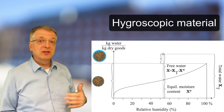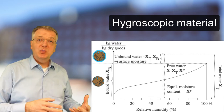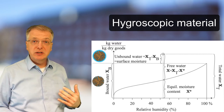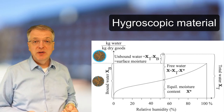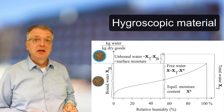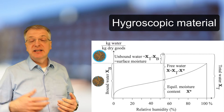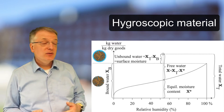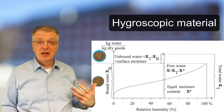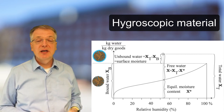Another way to divide the total water content is into bound and unbound water. The bound water is the equilibrium water content when the relative humidity of the air is 100%, and the unbound water is the water in excess of that. Thus, we can look at the unbound water as the water that can always be dried away, even with very humid air.